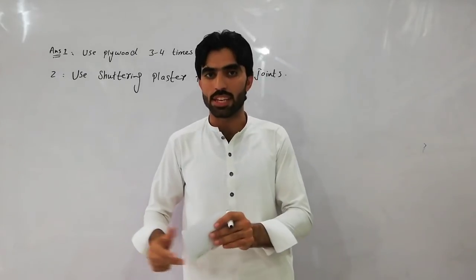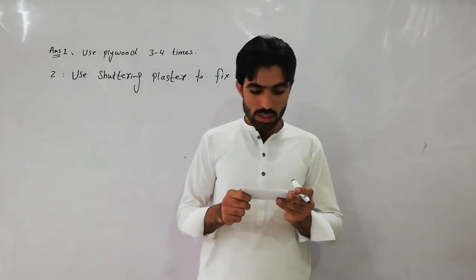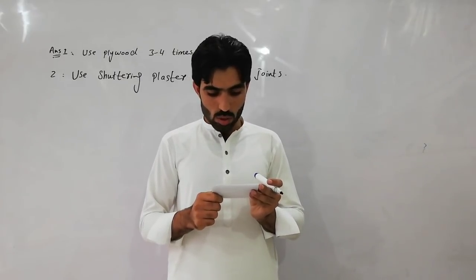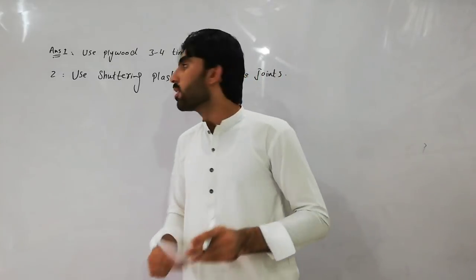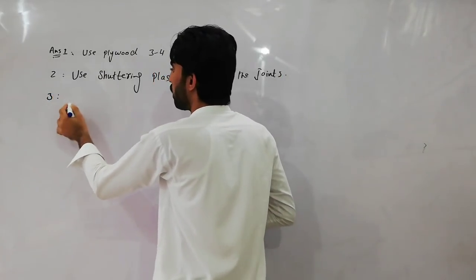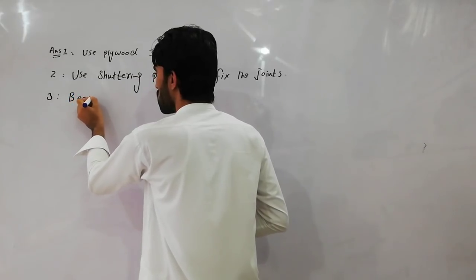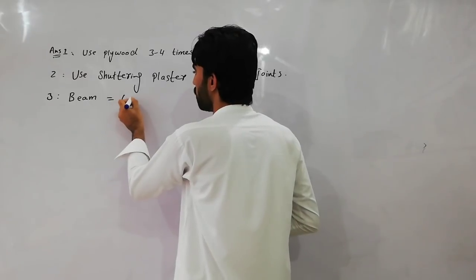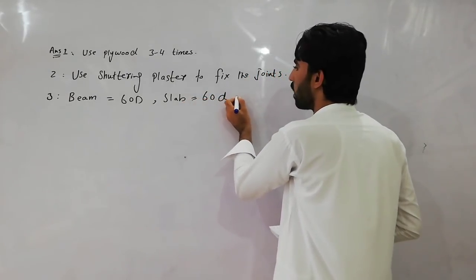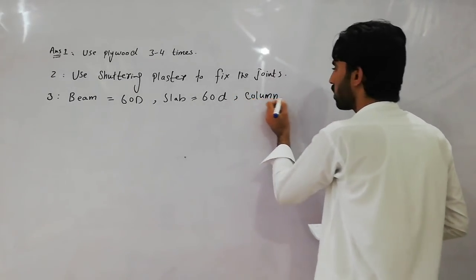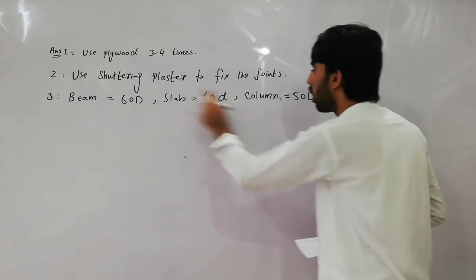Question number three: what is the lapping length for different parts of a building like column, beam, and slab? The answer is: for beam, use 60d; for slab, also use 60d. Here, d is the diameter of the steel bar being used in the structure.